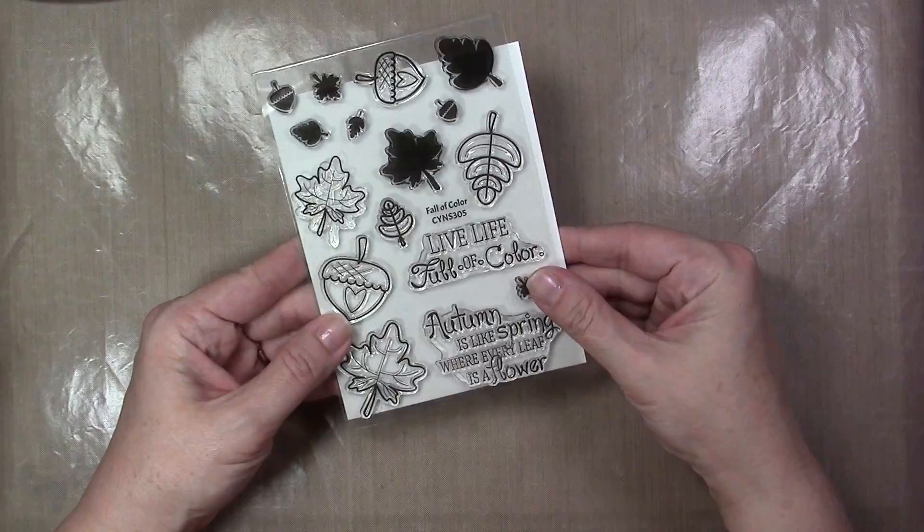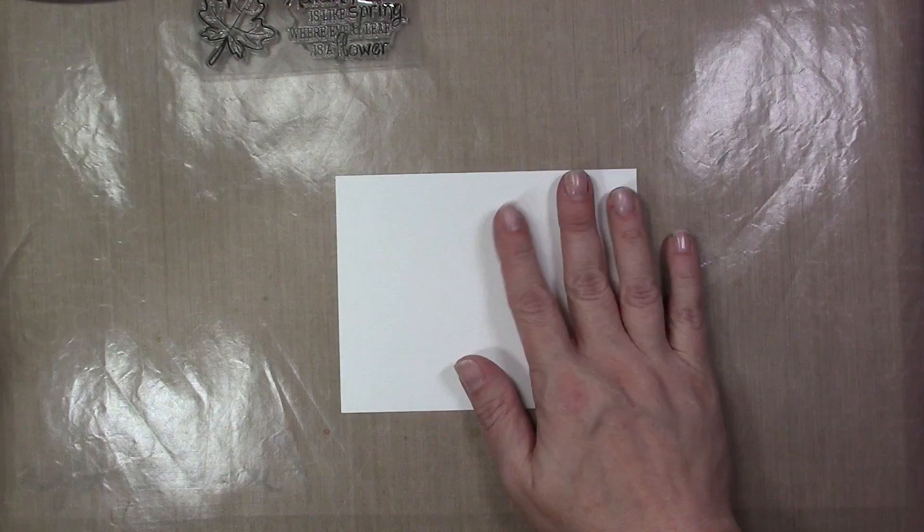Hey everybody, it's Holly here today for Your Next Stamp. I'm going to be using this Fall of Color stamp set along with the stitch rectangle die and some gold nugget gumdrops.